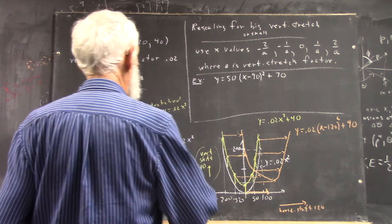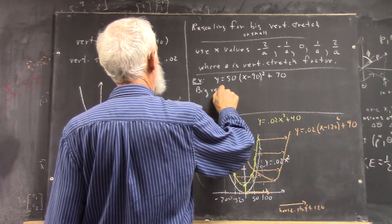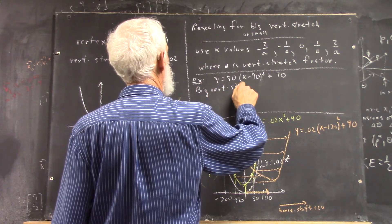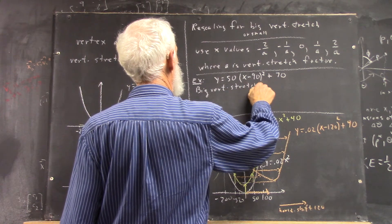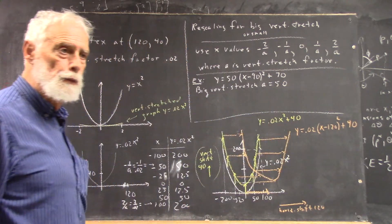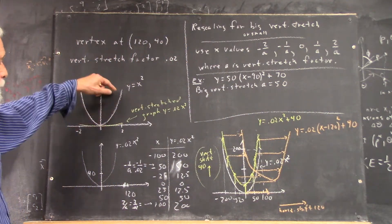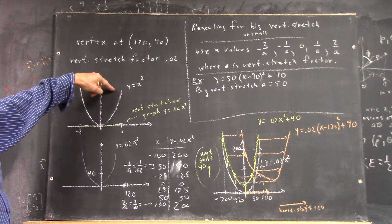So what I'm going to say here is this is a big vertical stretch. A equals 50. If you take just your standard y equals x squared graph and multiply all the numbers by 50,